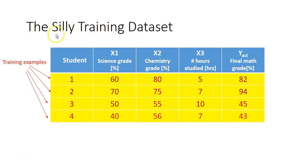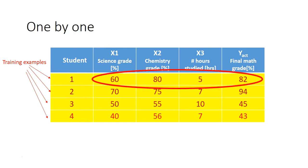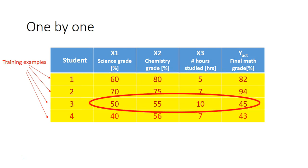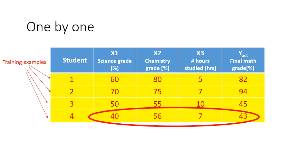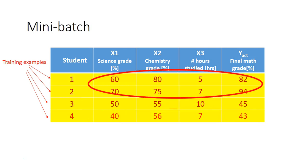For example, here's my training dataset which has four training examples. We can input this into the neural network one by one, and each time we input it, we carry out forward and back propagation and update the weights.